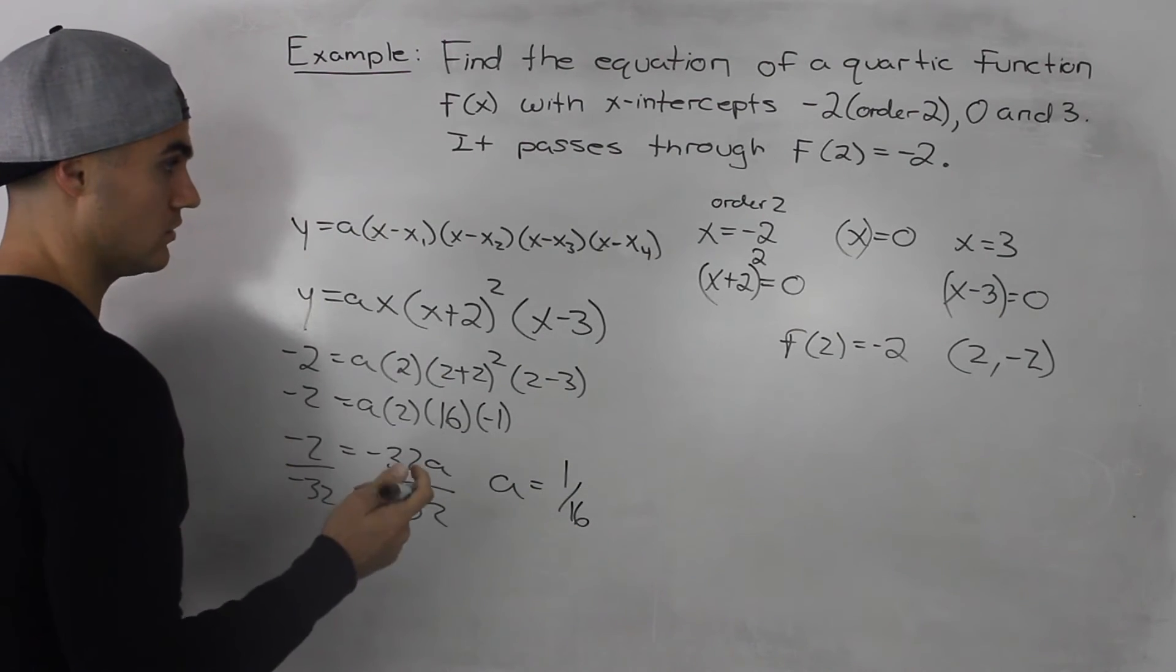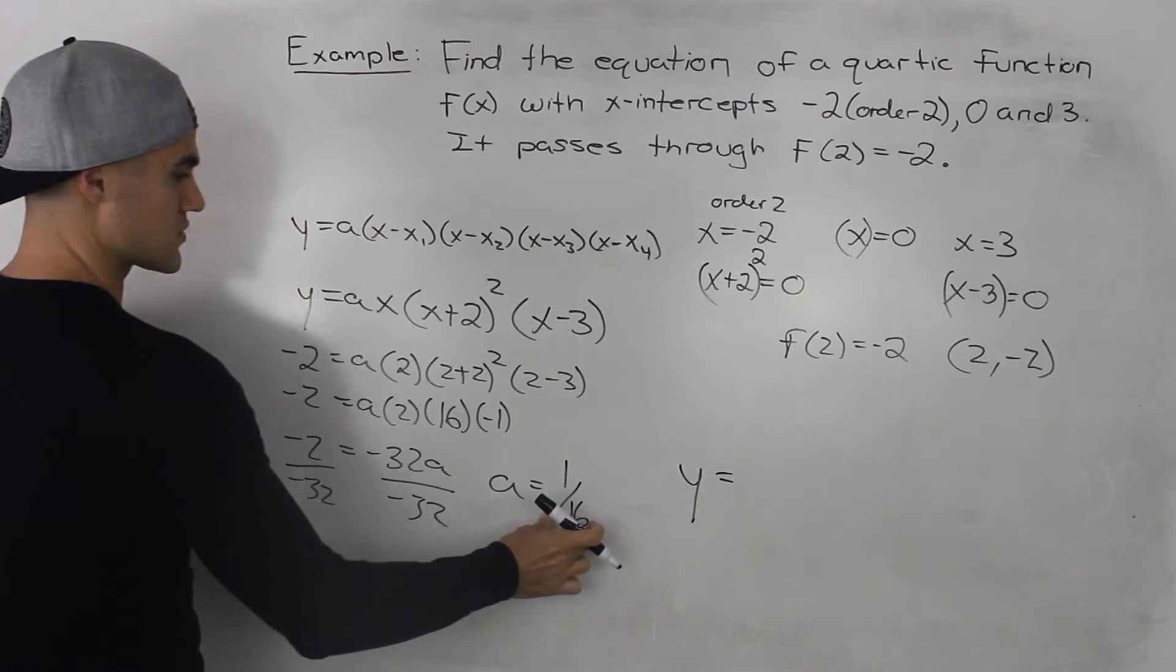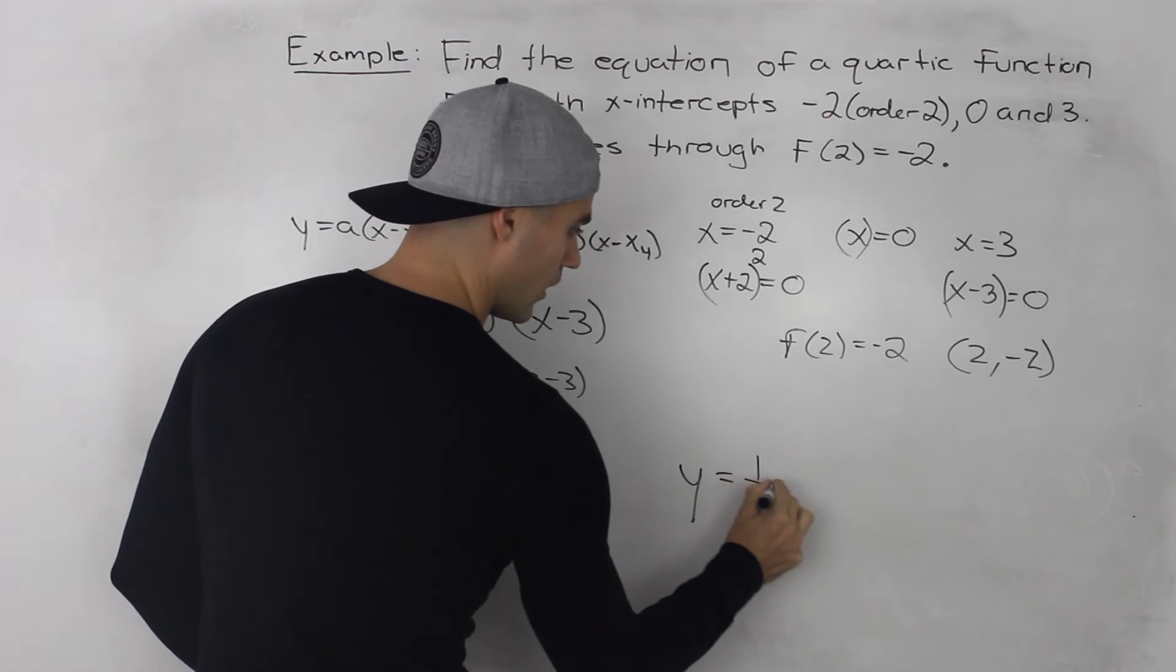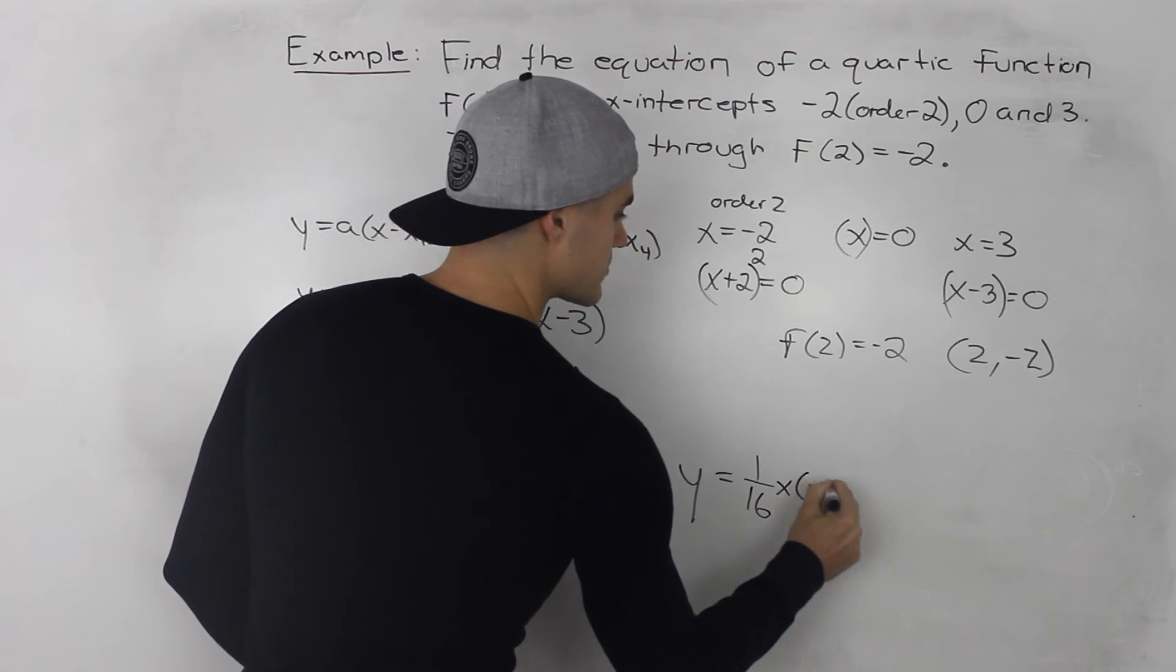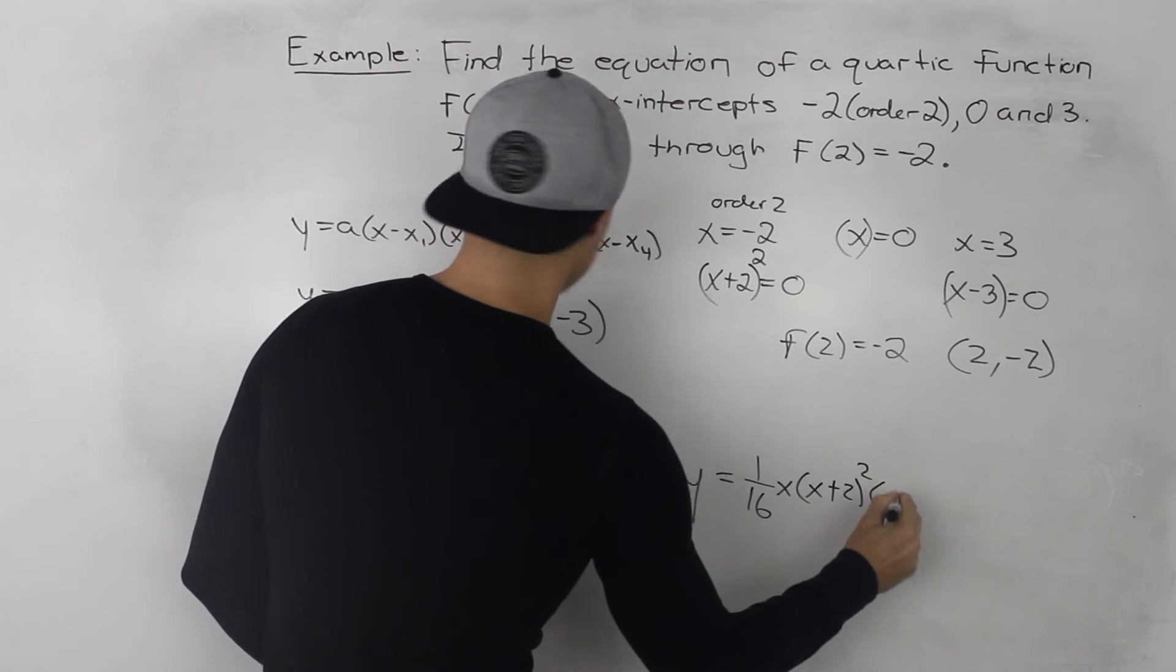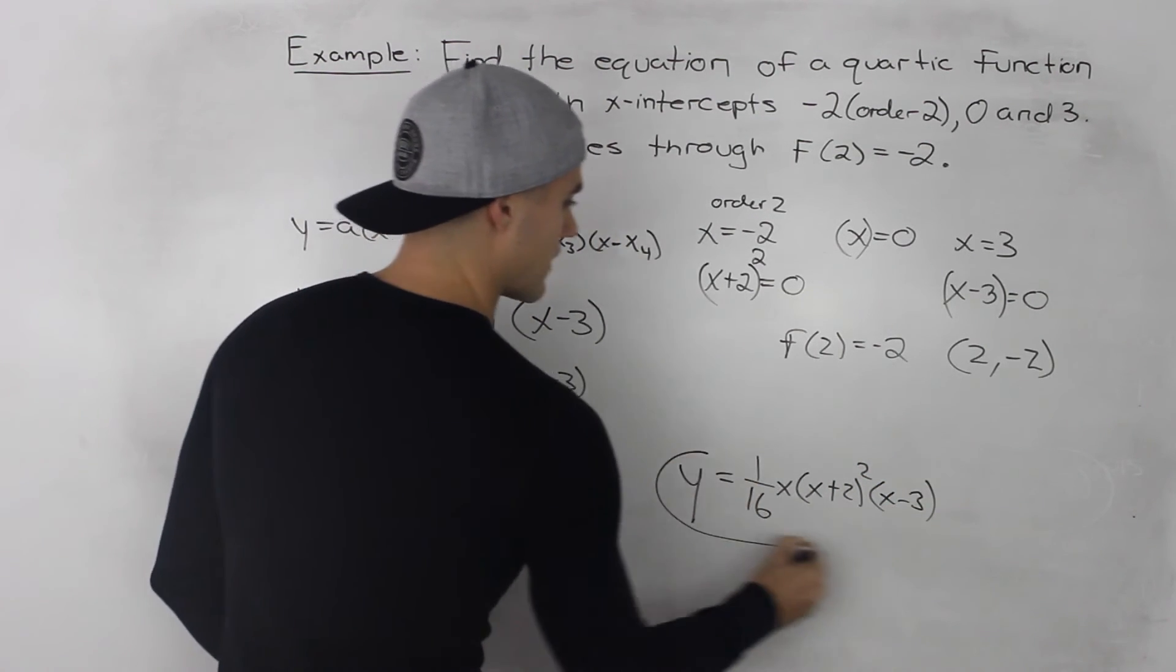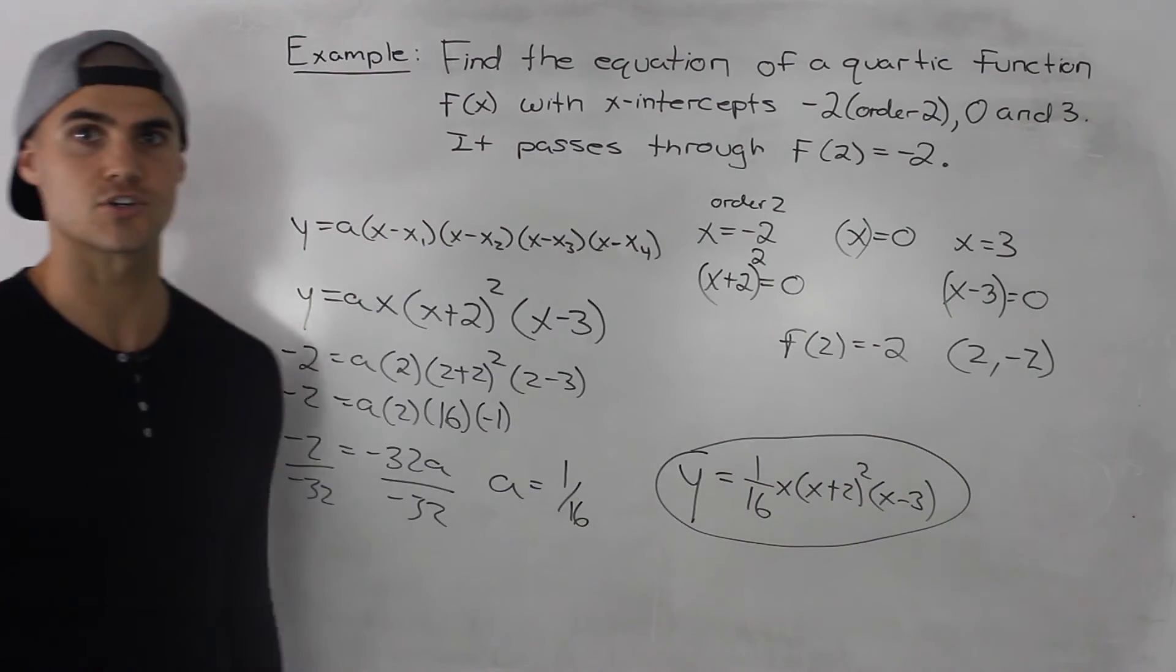So our final equation, we would plug in this 1/16 here, in this portion. So (1/16)x(x + 2)²(x - 3). So that there is our final quartic function with these characteristics.